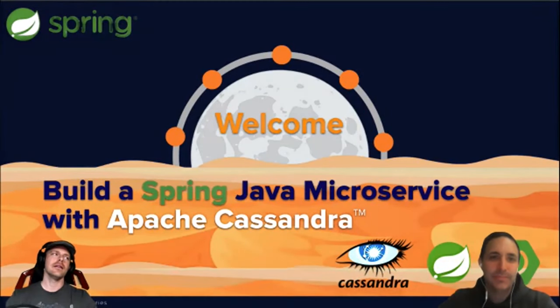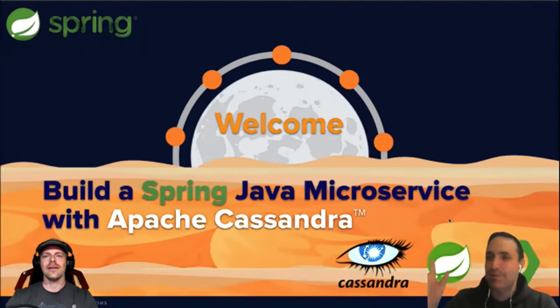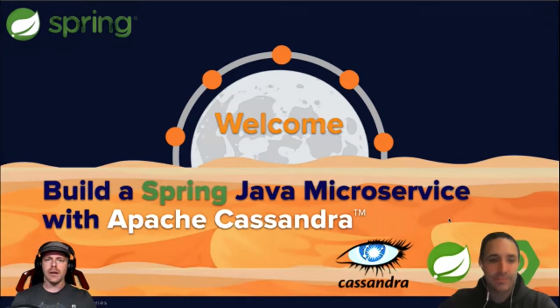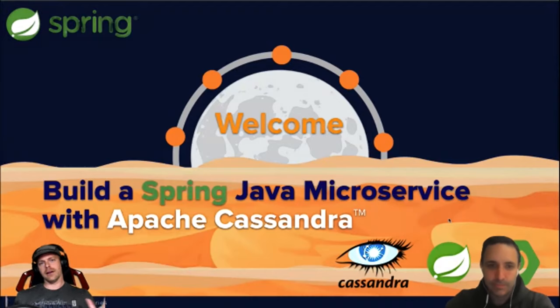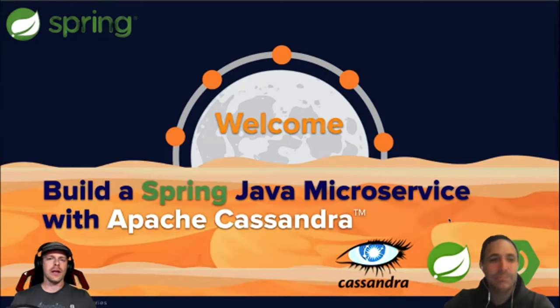Hello everybody, and thank you for that introduction. I'm David Jones-Gilardi, joined by my friend and colleague Cedric Levon. As Pedro mentioned, we'll have a couple parts to this. Part one will be Build a Spring Java Microservice with Apache Cassandra — we'll get into an app, a little code, and hook it up to an Apache Cassandra database. For part two, we'll bring in Patrick McFadden, who is like a god in the Cassandra community, and he'll explain how you can contribute back to the project. Then we'll end with Q&A.